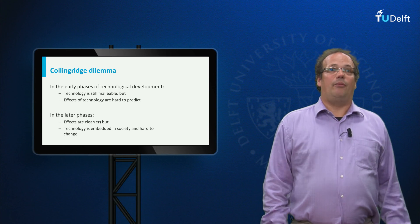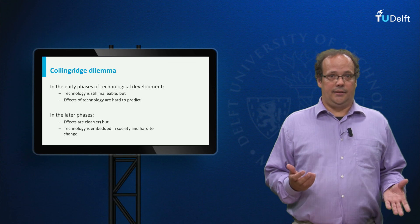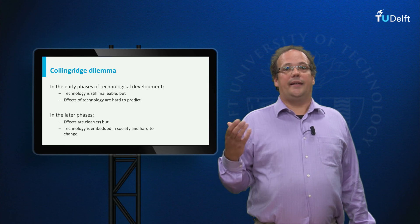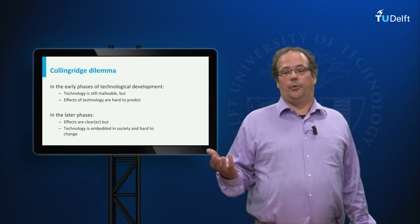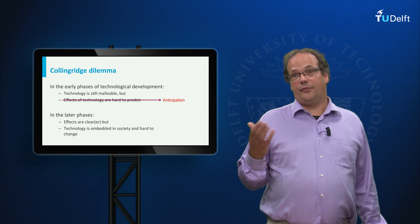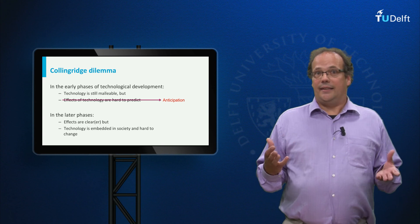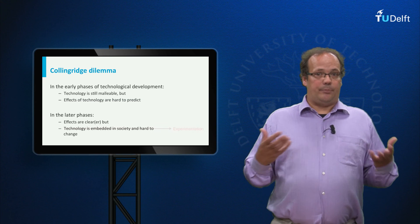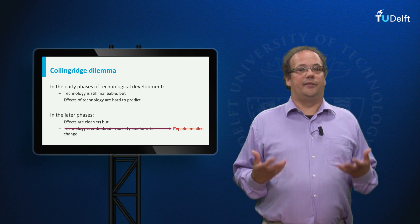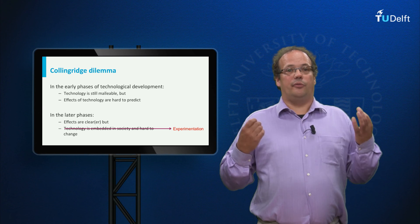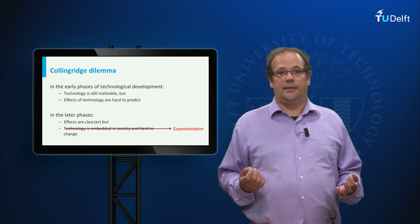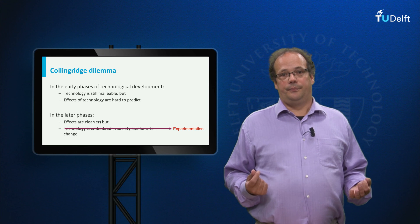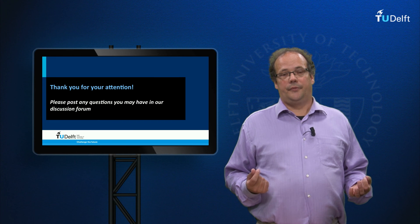At the end of this web lecture, I want to return to Collingridge's dilemma. Anticipation tries to attack the first horn of the dilemma by making technology more predictable, but as we have seen there are limits to this. The idea of new technologies as social experiments attacks the second horn: it accepts that some effects only become clear as technologies are introduced into society, but tries to avoid technology becoming too soon entrenched. I hope to have made clear what the advantages of such an alternative approach are. Thank you for your attention.